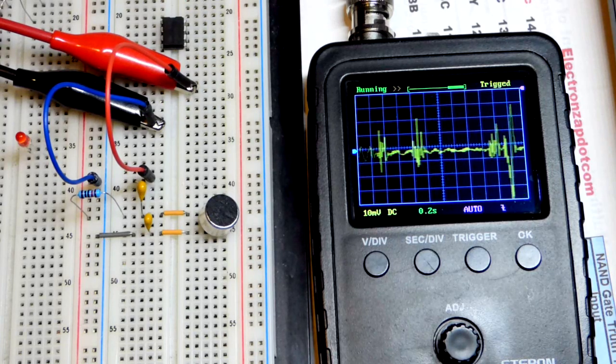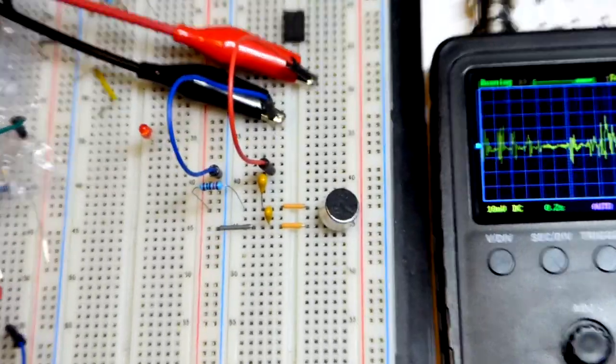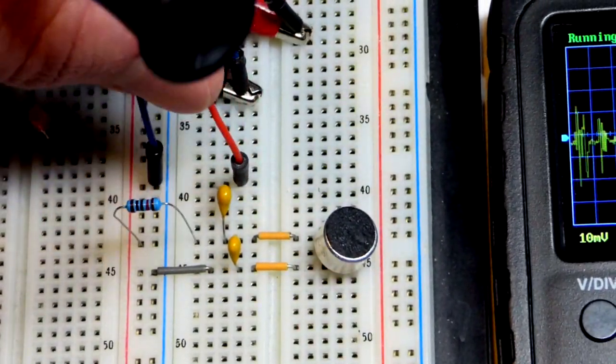So in any case, it is a pretty simple circuit. Let's zoom in and look at it a little closer. So this is just the oscilloscope. That's what's taking the measurement.